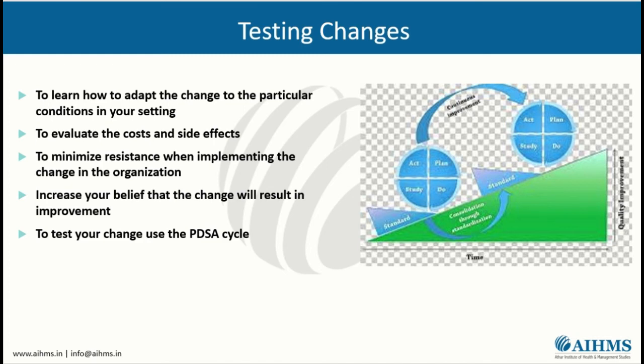To carry out a PDSA cycle: first, create a questionnaire and plan to carry out the cycle — who does what and when — and plan for data collection. Then carry out the plan, documenting problems and unexpected results for analysis. In the study phase, complete analysis of the data, compare data to predictions, and summarize what was learned. Then determine what changes are to be made in the next cycle and plan again — do, study, and act. Much can be learned from a failed test. Continuously test the changes; once you identify what works, the change has to be sustained.